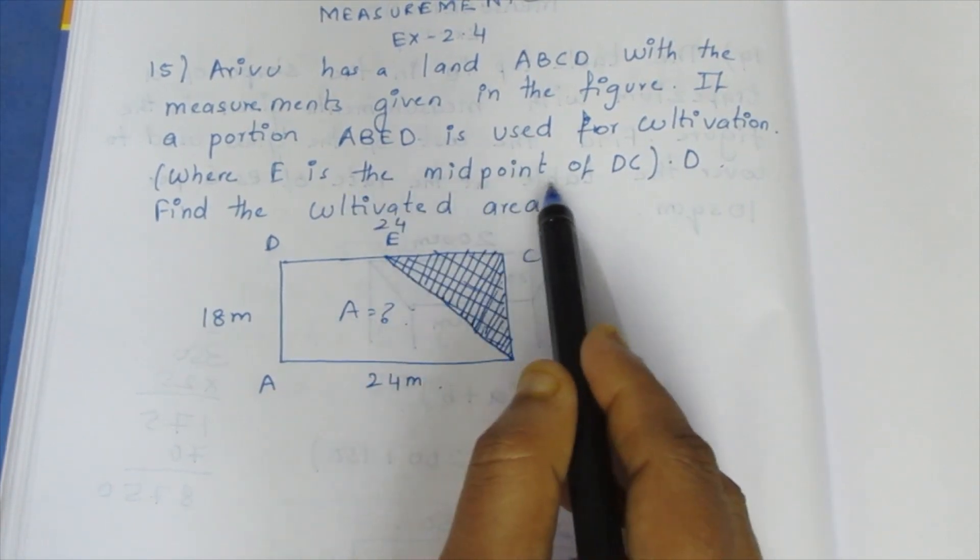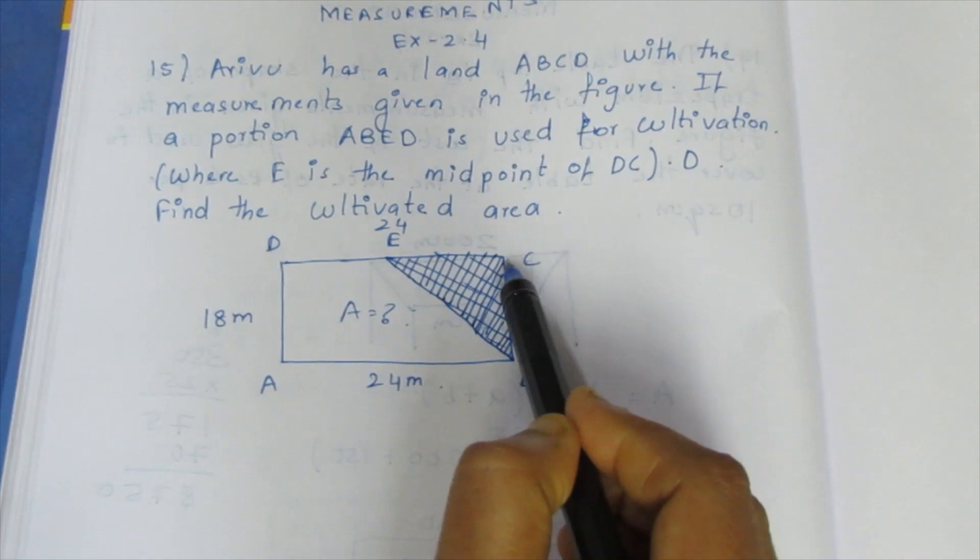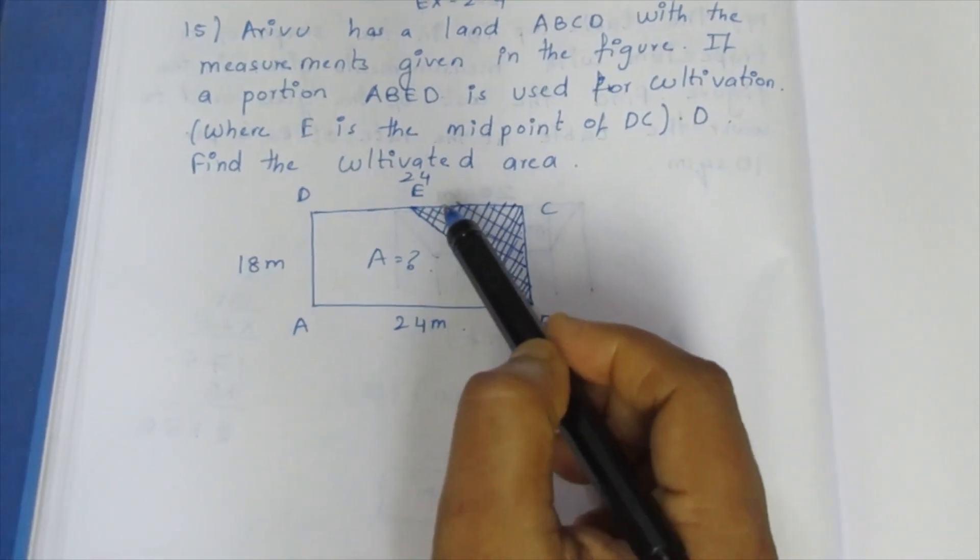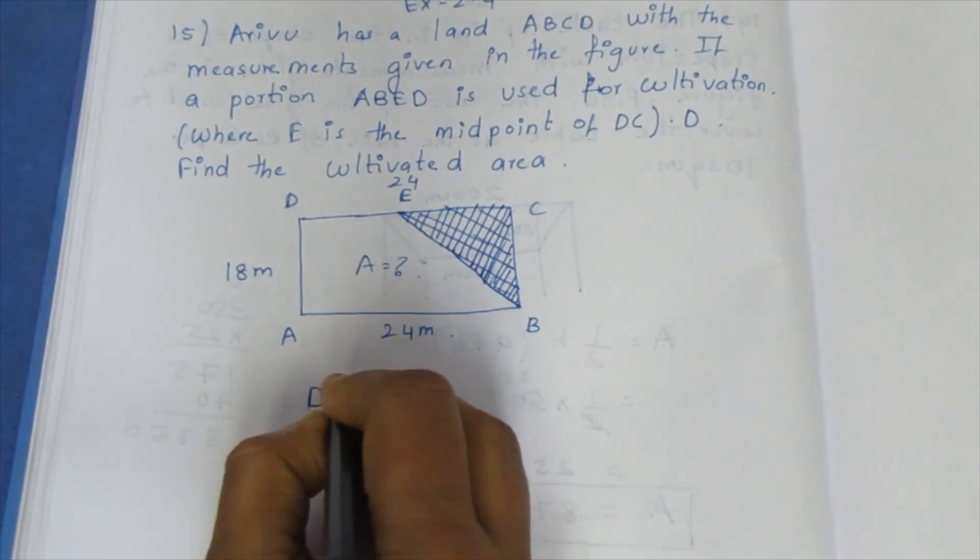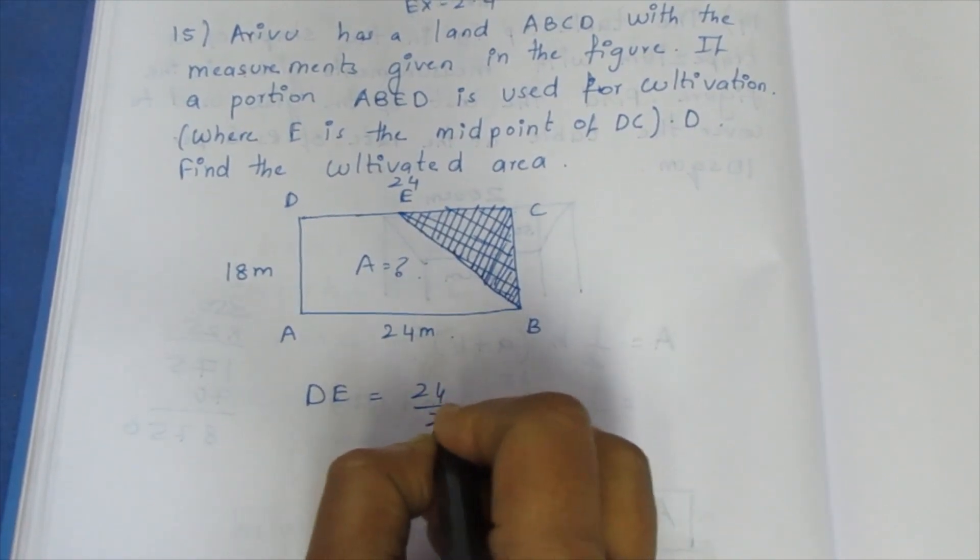E is the midpoint. This is the total length. DE is equal to 24 divided by 2, which equals 12m.